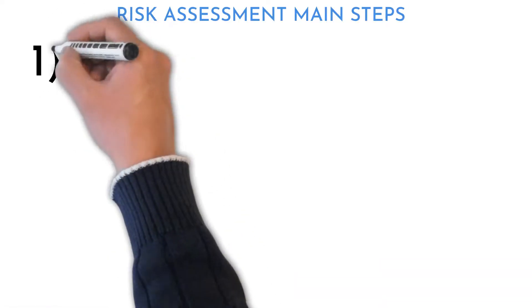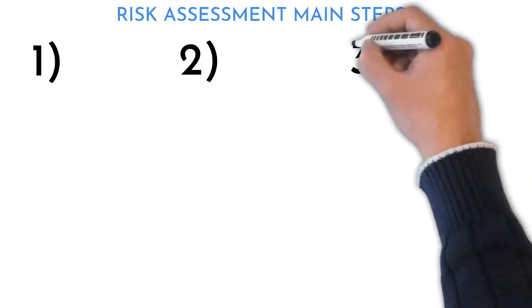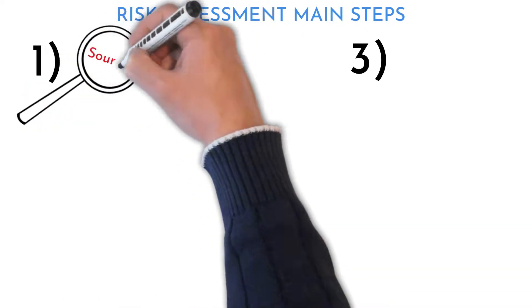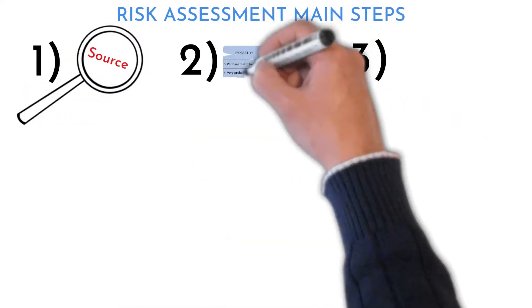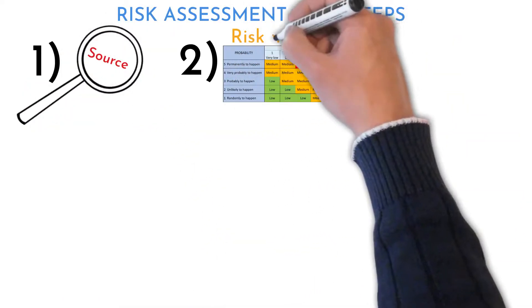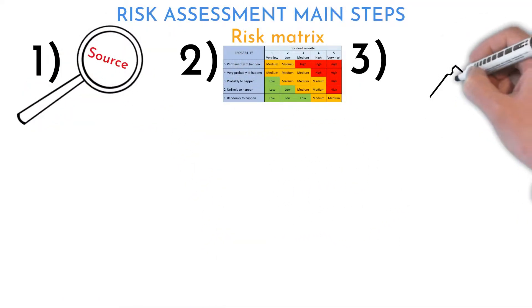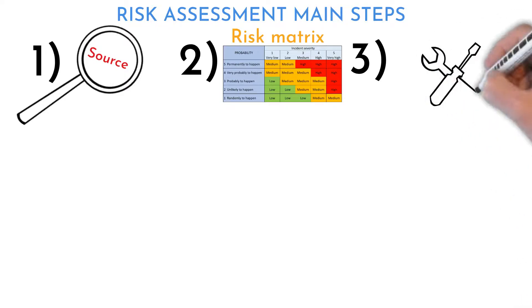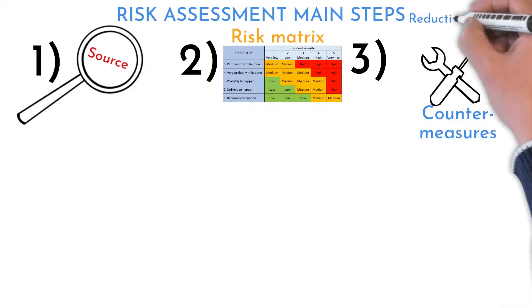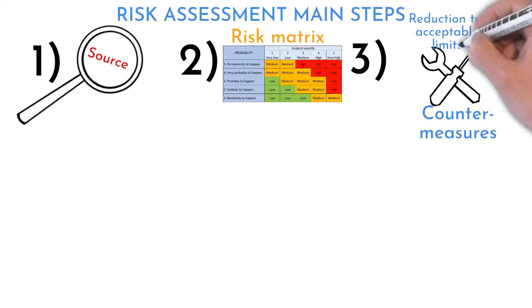Here are three steps to proceed with risk assessment: risk source identification; risk seriousness evaluation using the risk matrix; and counter-measures introduction — if not to full risk elimination, then at least to risk reduction.